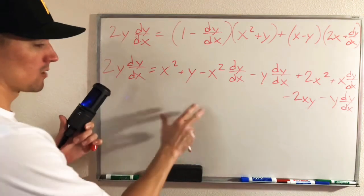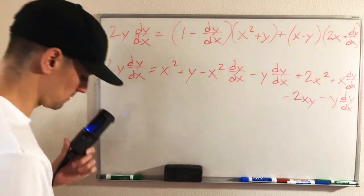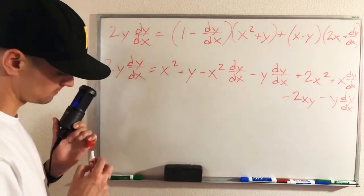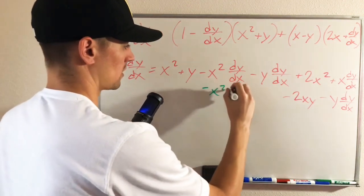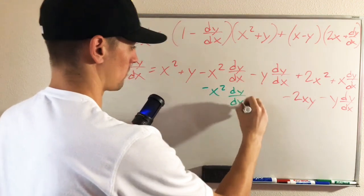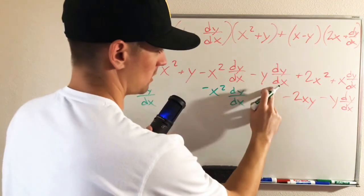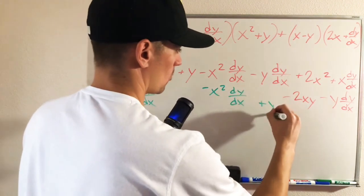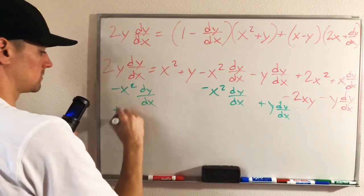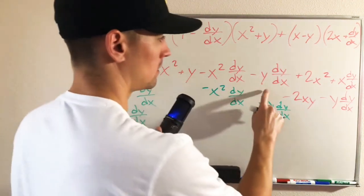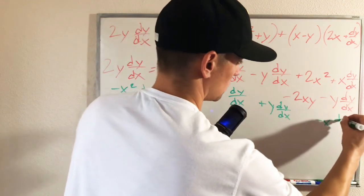This term right here has a dy/dx, so we're going to do minus x squared dy/dx from both sides. This term here has a dy/dx, so we're going to add y times dy/dx to both sides. This term here has a dy/dx, so minus x dy/dx.